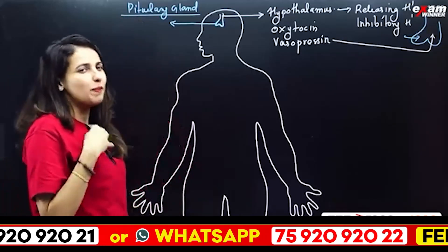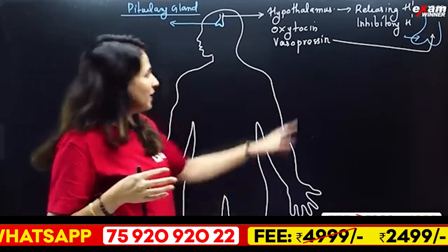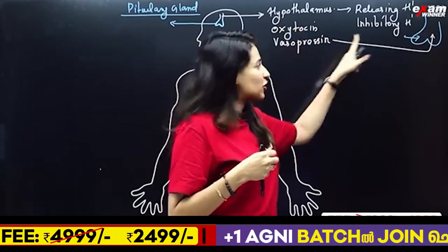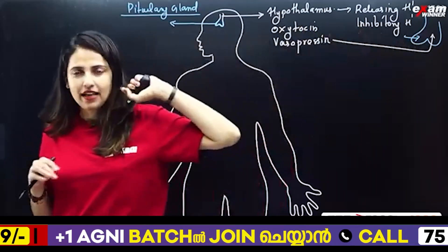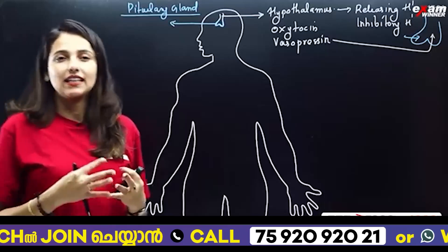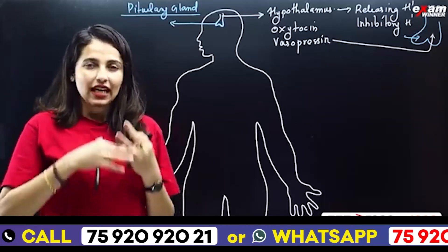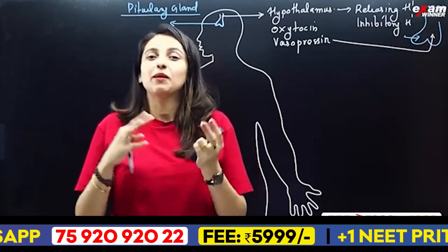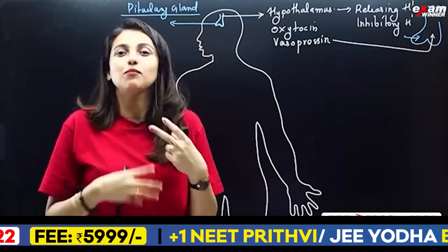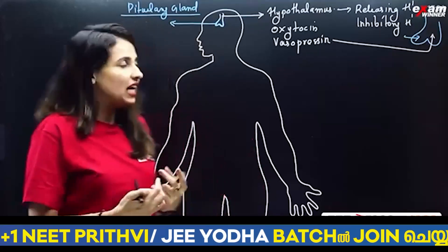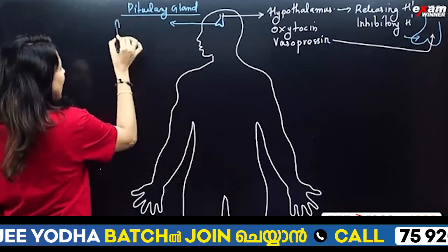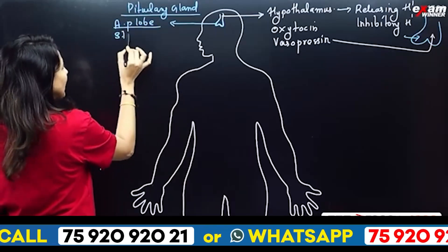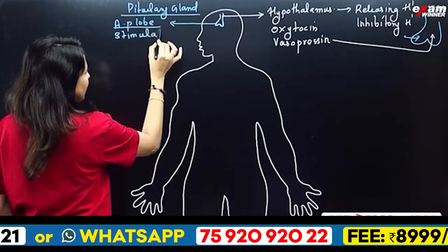In the posterior lobe, we have hormones — oxytocin and vasopressin from the hypothalamus. The anterior lobe has its own pituitary hormones, which stimulate most of the glands. The anterior lobe of the pituitary gland has a stimulating effect.